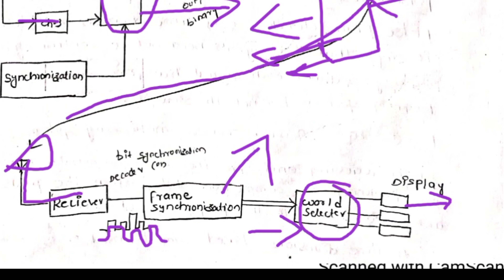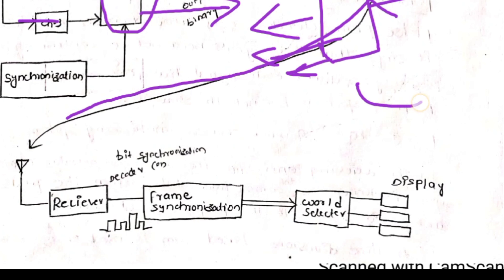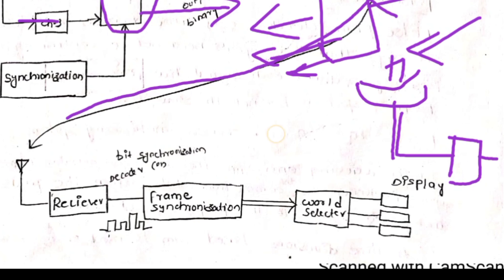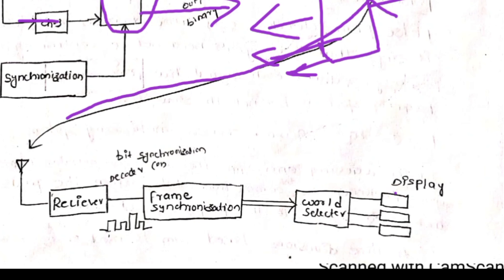In a DTH system at home, the dish receiver on top of your house receives the signal from the satellite via radio communication. In your television, it is demodulated, and according to the remote control, you can change channels. All channels are sending data to your television, but you watch only one at a time — this is time division multiplexing in pulse amplitude modulation telemetry systems. Nowadays, pulse code modulation (PCM) is used for digital transfer of data.